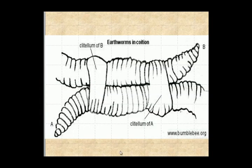Here are earthworms in coitus. The clitellums basically secrete a mucus ring around the other worm and they both pass sperm to each other.